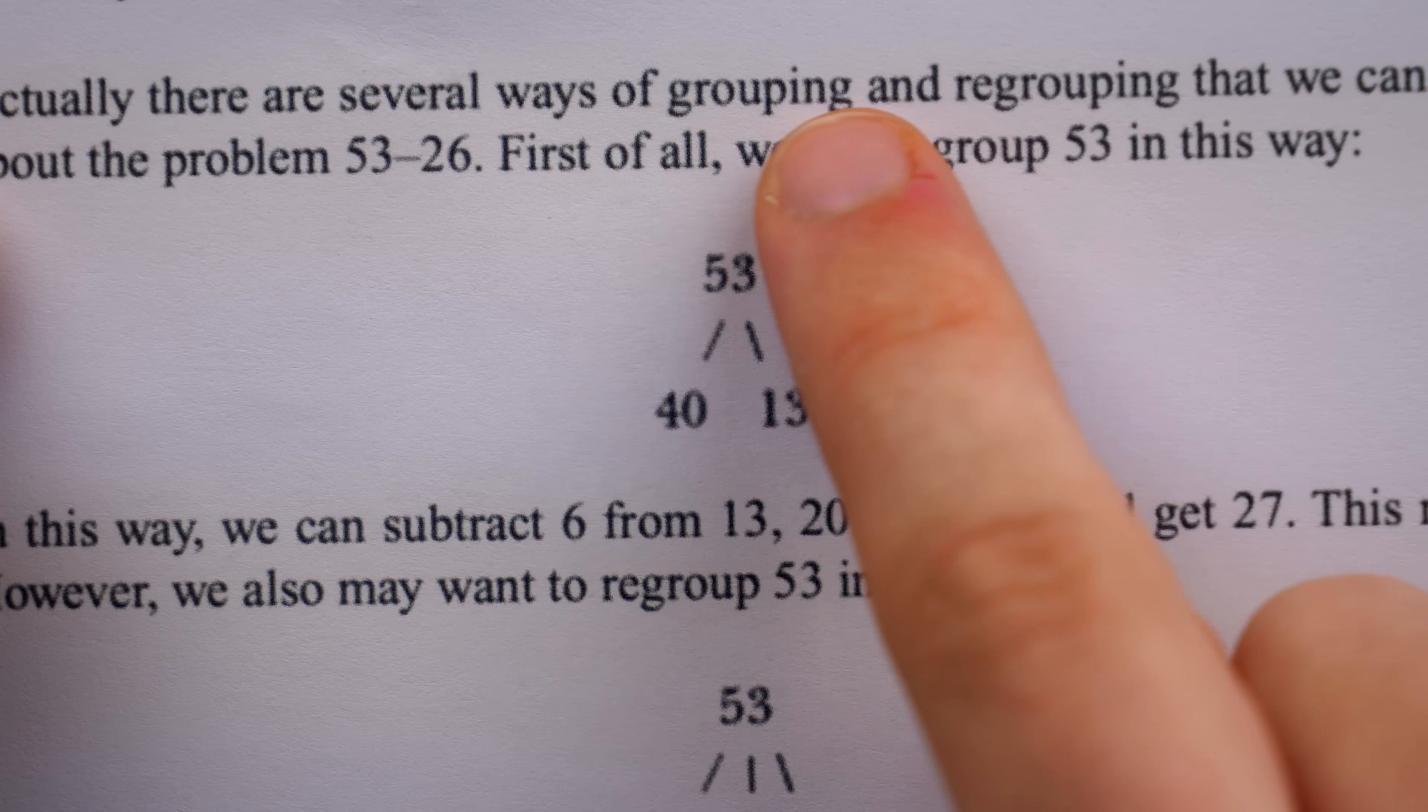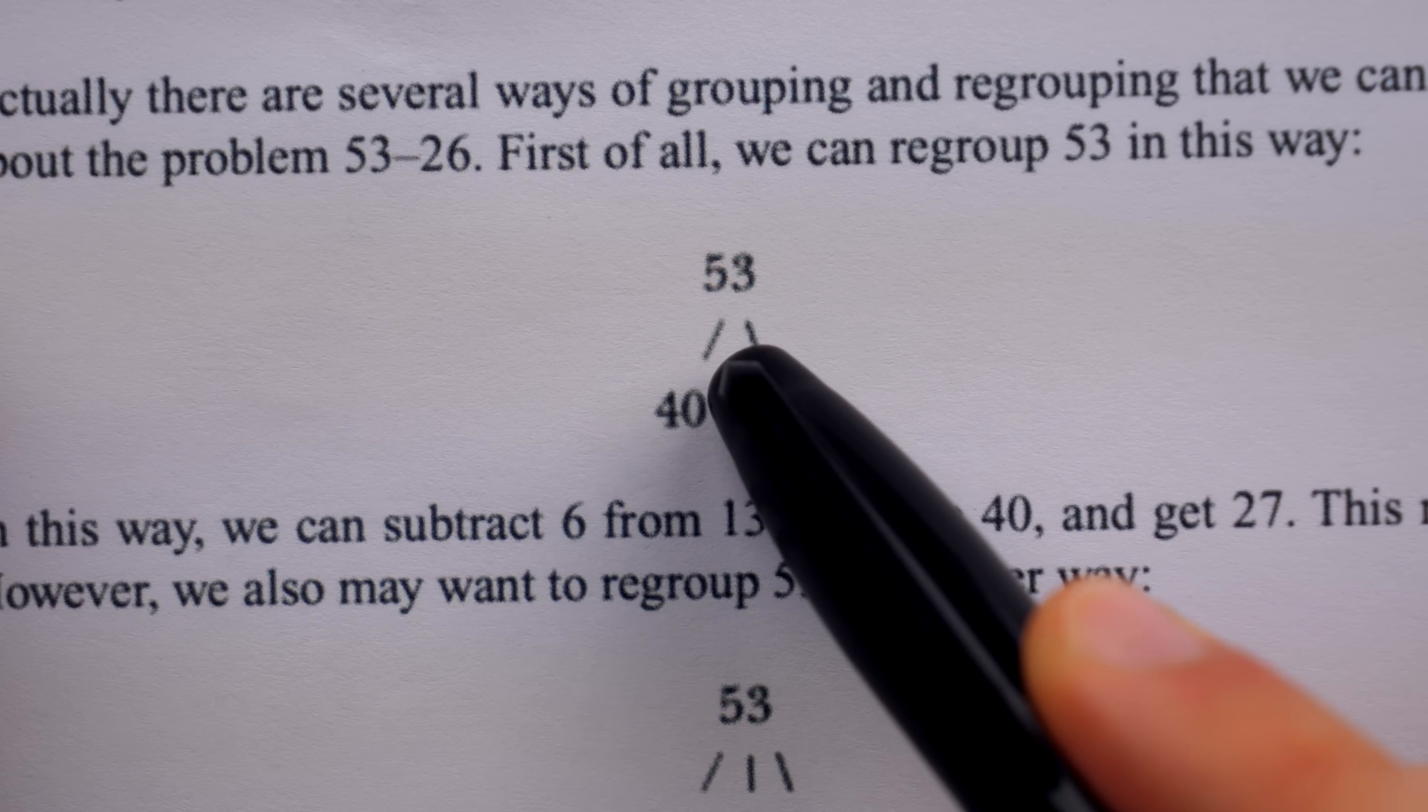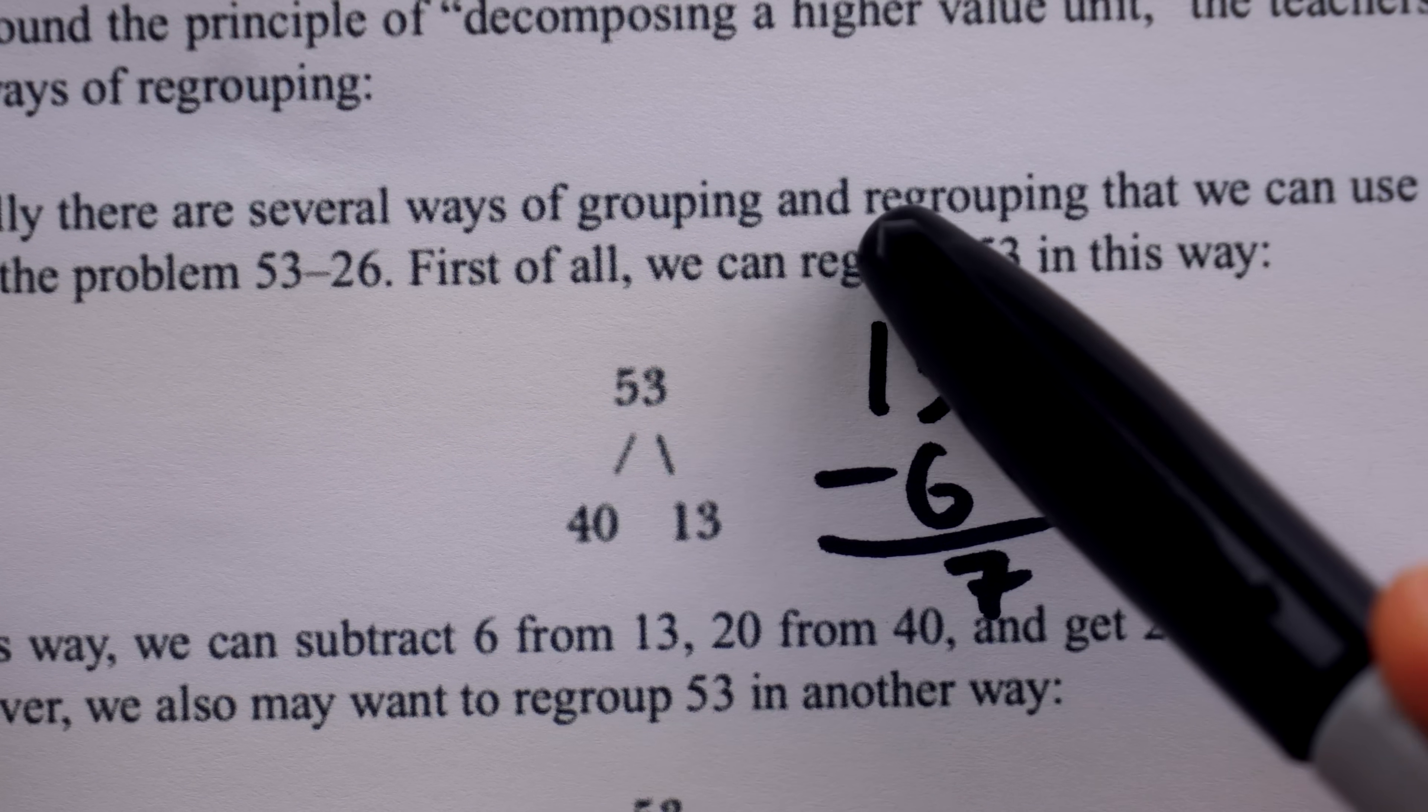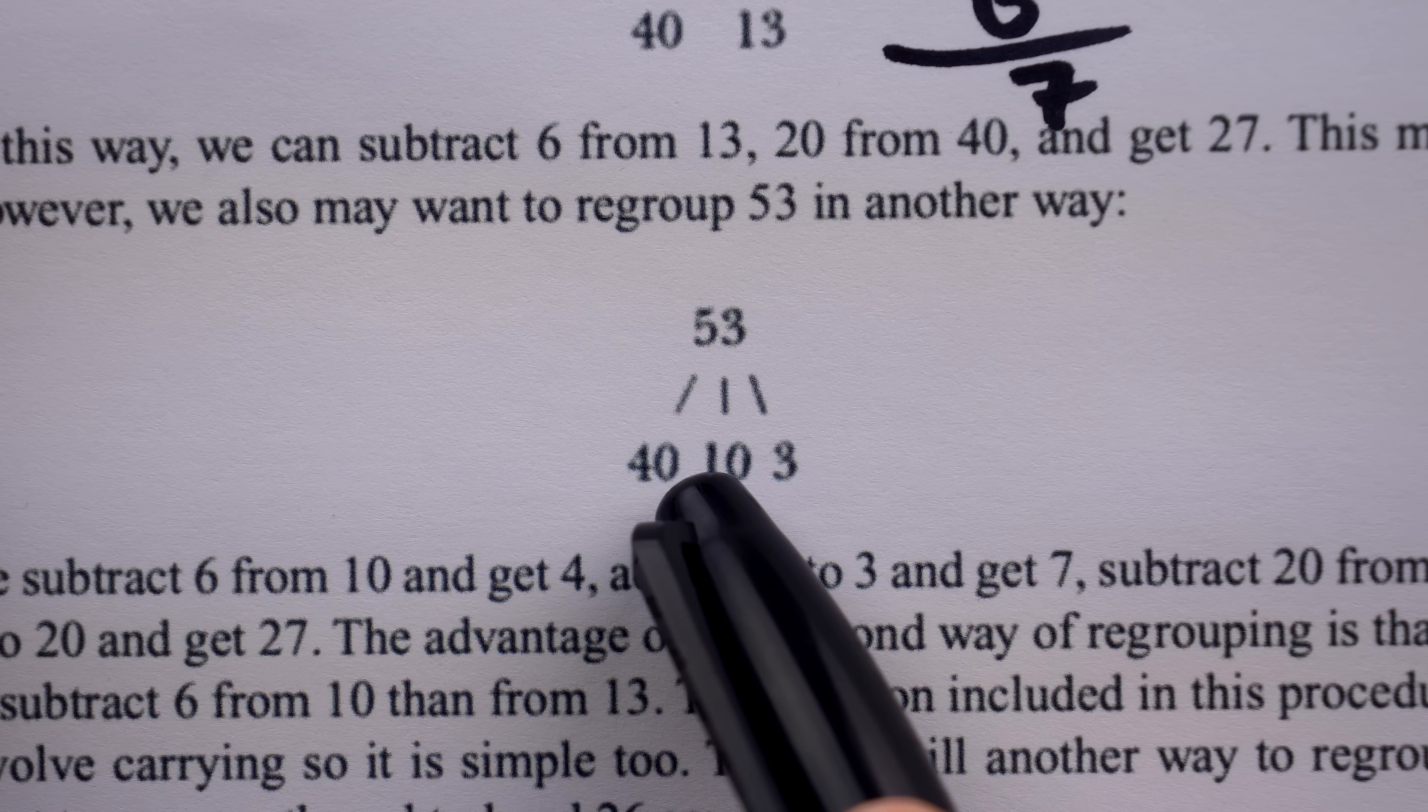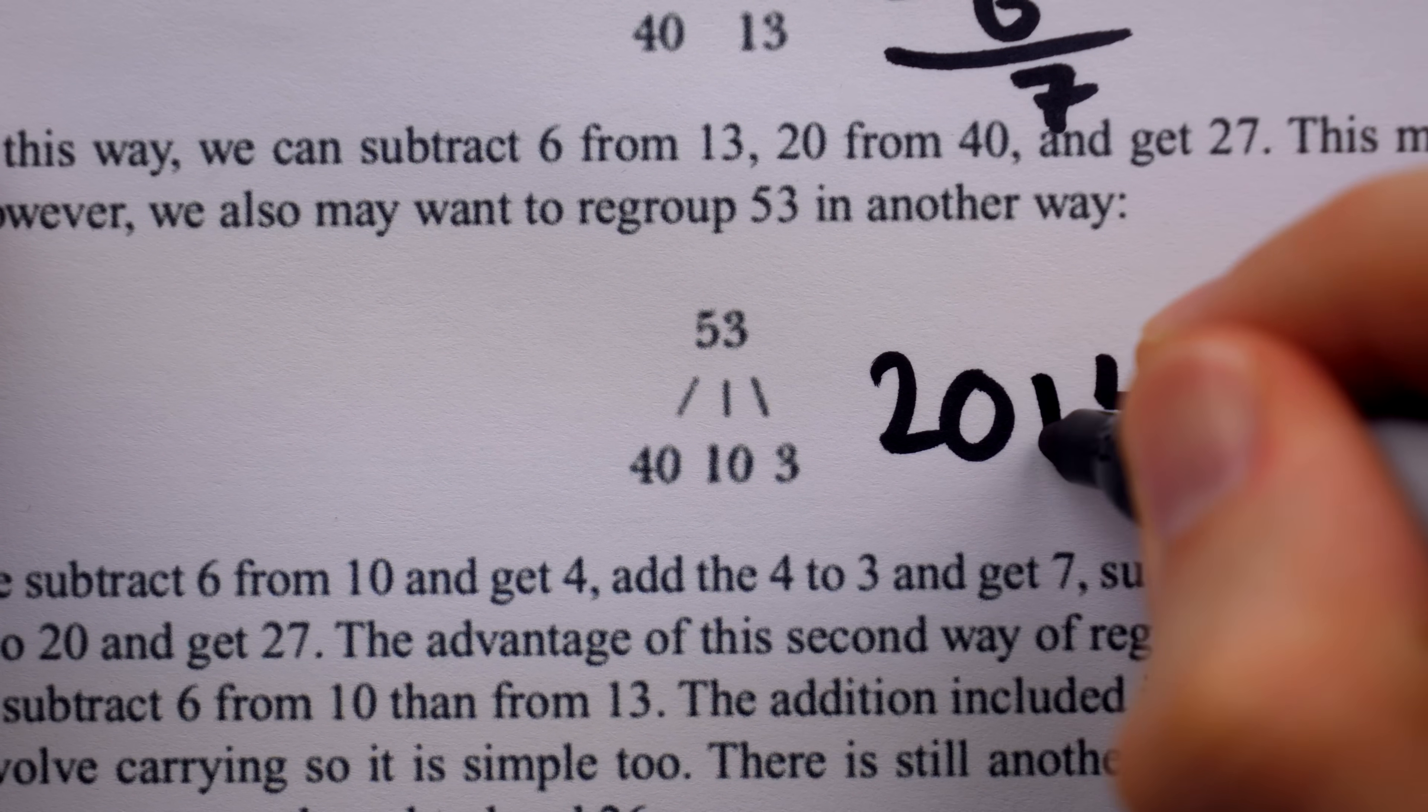For example, if we just use the normal regrouping method, here you're going to end up taking 6 away from 13. Like we talked about, the standard regrouping method doesn't really do you any good when it comes to the teens minus a single digit number. You have to just know that 13 minus 6 is equal to 7. But if you don't know that, you could decompose the minuend in other ways to get around the problem. Instead of combining the 10 with the 3, you could leave the 10 all on its own and take the 6 away from that, then take the 20 away from 40, and then you just have a 20, a 4, and a 3 to combine together to get your final answer.